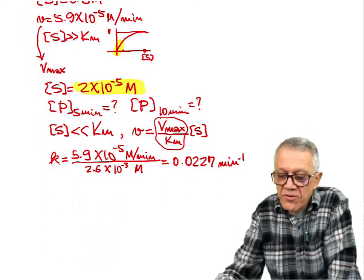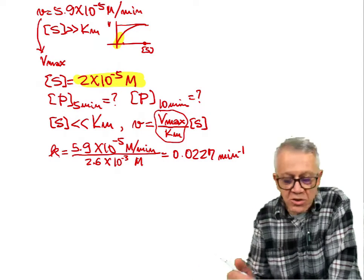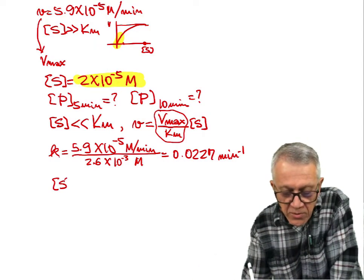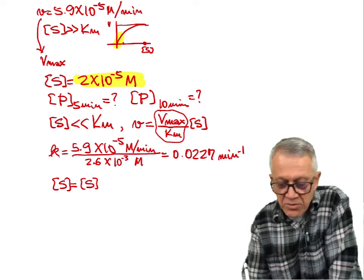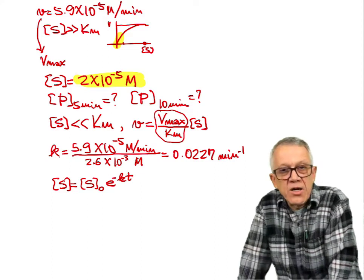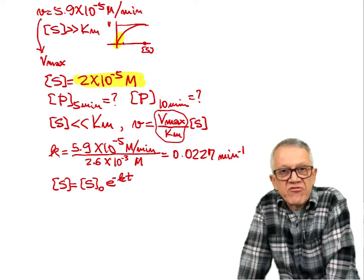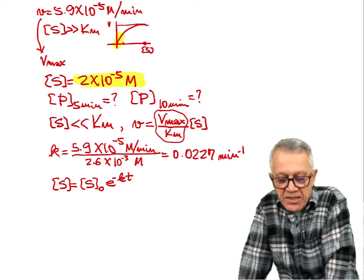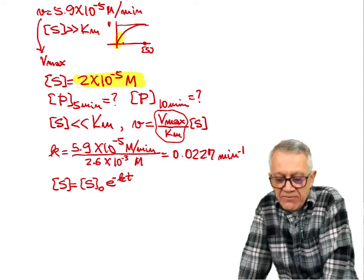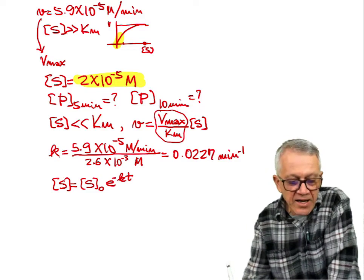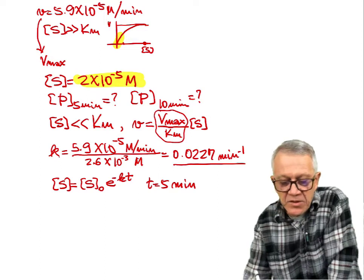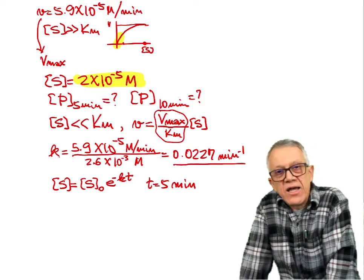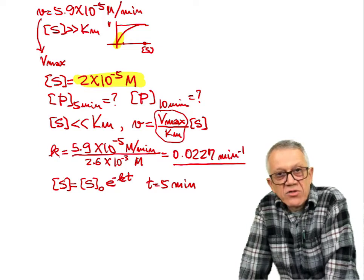Now, based on first-order kinetics, the concentration of substrate at any time is given by [S](t) = [S₀]×e^(−Kt). This is useful because substrate concentration decreases exponentially. We now have K = 0.0227 min⁻¹ and the time of 5 minutes.